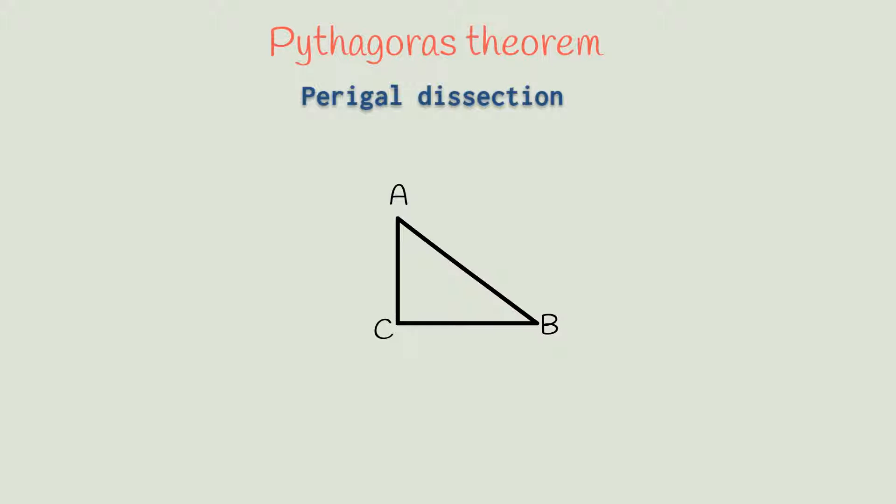Construct a triangle ABC right angled at C. Draw squares on AB, BC, and CA.